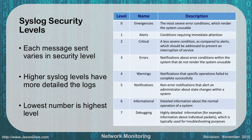Syslog security levels — each message sent varies in severity. Higher syslog level numbers have more detailed logs, and the lower the number, the higher the security risk. Level 0 is an emergency, level 1 is an alert, level 2 is critical, level 3 is an error, level 4 is a warning, level 5 is a notification, level 6 is informational, and level 7 is debugging. For the exam, understand that a lower number is more severe and a higher number is less severe — for example, emergency is more severe than critical.